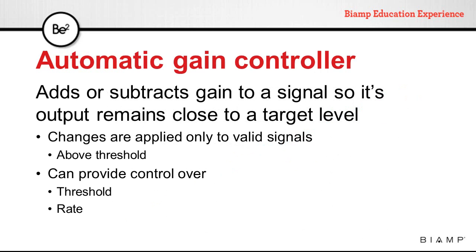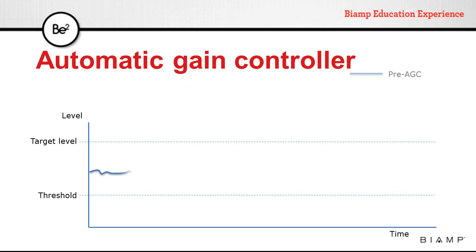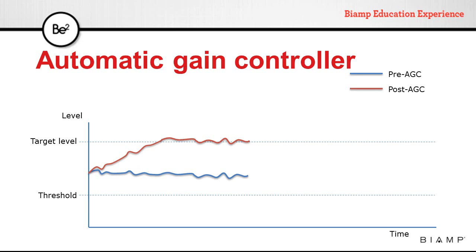An automatic gain controller is a processor that can add or subtract gain to a signal so it remains as close as possible to a target level. As with all dynamic processors, they act only on valid signals that are above the threshold. If a signal is above the threshold but below the target level, the AGC will add gain until the output is at the target level. If the incoming signal suddenly drops below the threshold, the output of the AGC also drops, but only while the signal is above the threshold. Once the signal is below the threshold, no processing is done.